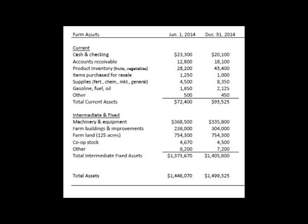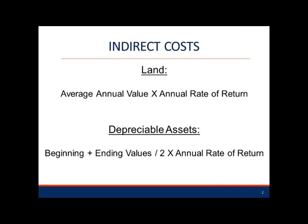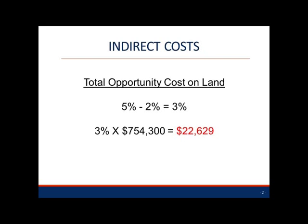The rate of return used to calculate this cost should reflect the opportunity cost associated with your investment and the interest cost charged on loans. For money invested in land, you determine the average annual value of the property and multiply it by an appropriate annual rate of return. For depreciable assets, you add their beginning and ending values, divide by 2, and multiply the result by an appropriate annual rate of return. Robert and Mary determined that the total opportunity cost on land should be $22,629, calculated by taking a rate of return of 5% and subtracting 2% for annual depreciation to get a net charge of 3% per year, then multiplying the average annual land value of $754,300 by 3%.